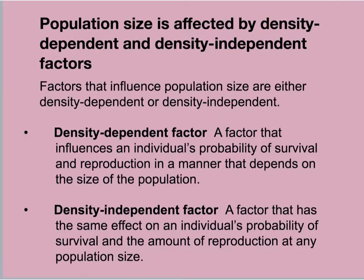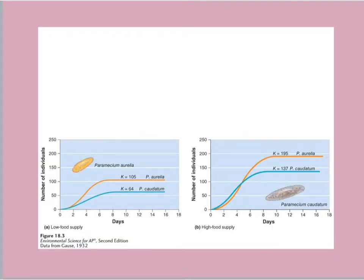Looking back at Gause's 1932 experiment, the two Paramecium populations showed the same type of plateau whether they had a high food supply or a low food supply. One group simply increased the number at which they grew, but eventually both populations plateaued. When twice as much food was provided, both species attained a population size nearly twice as large, but once again, they leveled off.